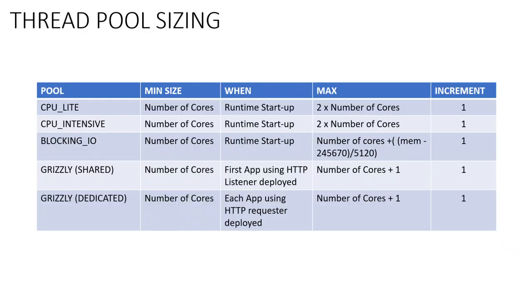For thread pool sizing: CPU Light has a minimum size based on the number of cores, is created at startup, and a maximum size of 2 × number of cores, incrementing by 1. CPU Intensive similarly has a minimum of number of cores, created at startup, and a maximum of 2 × number of cores. Blocking I/O minimum also depends on number of cores and is created at startup; the maximum size formula is: number of cores + (memory − 245670) / 5120, with increments of 1.